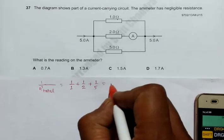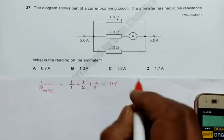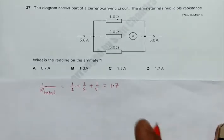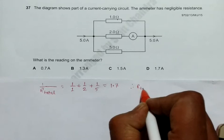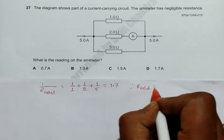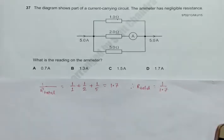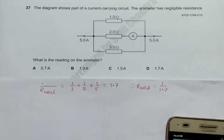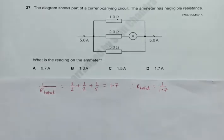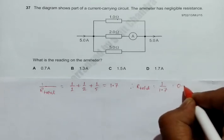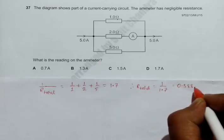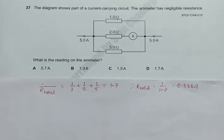1.7. So this gives us 1/Rtotal = 1.7, therefore Rtotal equals the reciprocal of 1.7. Using the calculator, shift, reciprocal equals, it is 0.588 ohms. So the combined resistance is 0.588 ohms.